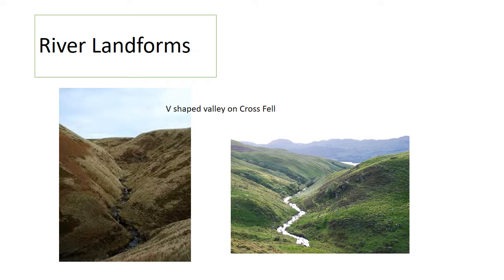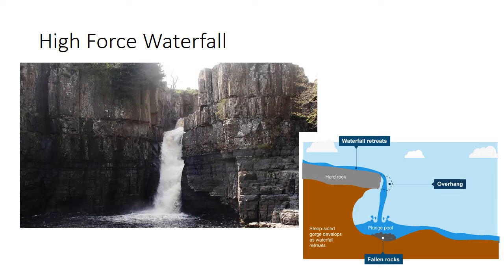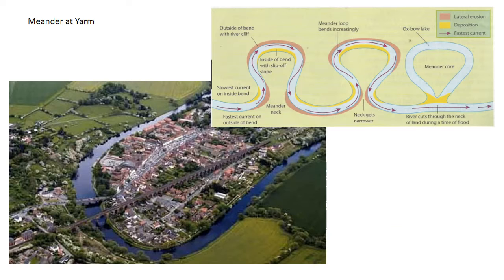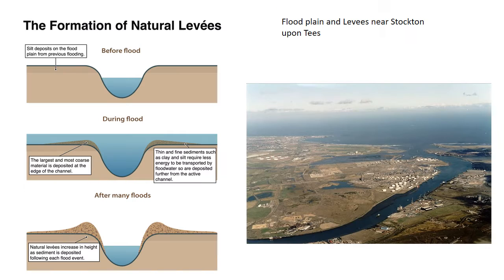In its upper course, you will be familiar with V-shaped valleys such as those found on and around Crossfell. Also in the upper course, High Force waterfall. Further down the river in the middle course, we've got meanders such as the meander at the town of Yarm. And then in the lower course, features such as floodplains and levees near Stockton-upon-Tees.